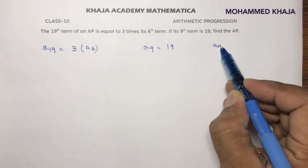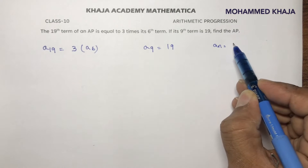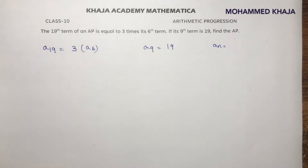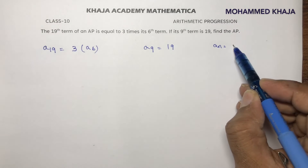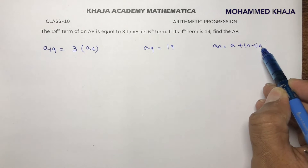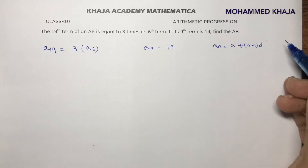The nth term formula is: we need to find the AP, meaning the first term, second term, third term, and then so on. The nth term is A plus (N minus 1) into D.